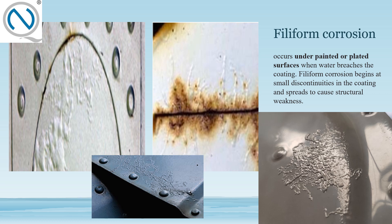Next is filiform corrosion. Whenever you encounter the word filiform, relate it to paint. Filiform corrosion usually occurs under painted or plated surfaces. When water breaches the coating, filiform corrosion begins at a small defect in the coating and spreads to cause structural weakness. You can see the corrosion spreading under the paint, moving like a worm underneath the painted surface.